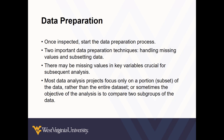It's important to investigate missing values because you may be missing information in key variables that are really important for the analysis you're trying to perform. In some scenarios, it's possible to do what's called imputation, where we estimate a value to put in place of the missing value. In other scenarios, we have to just not use that observation. Many data analysis projects also focus only on a portion or subset of the data rather than the entire data set.